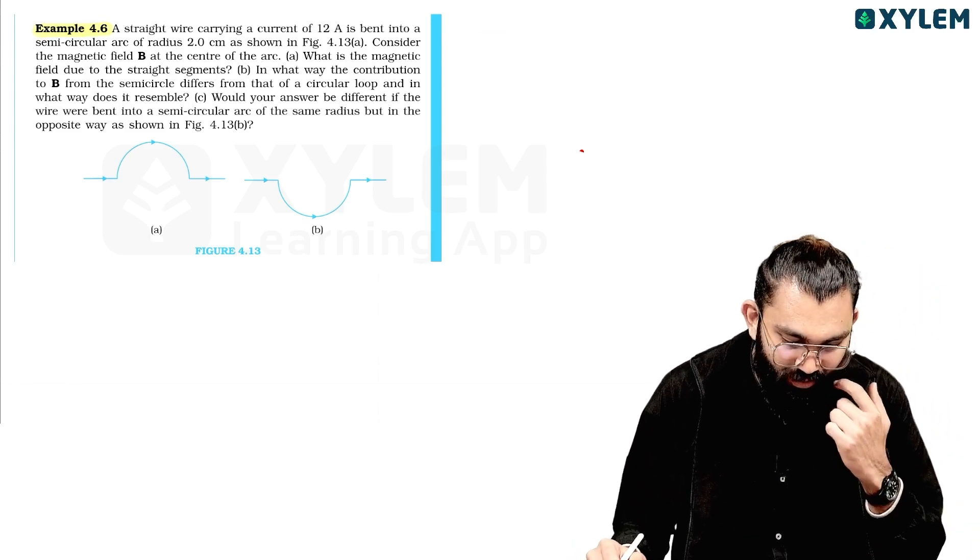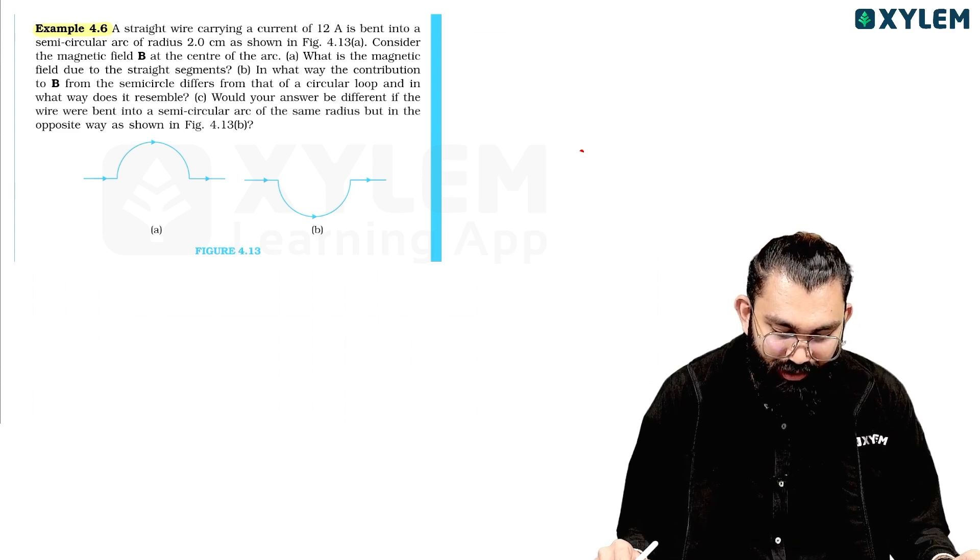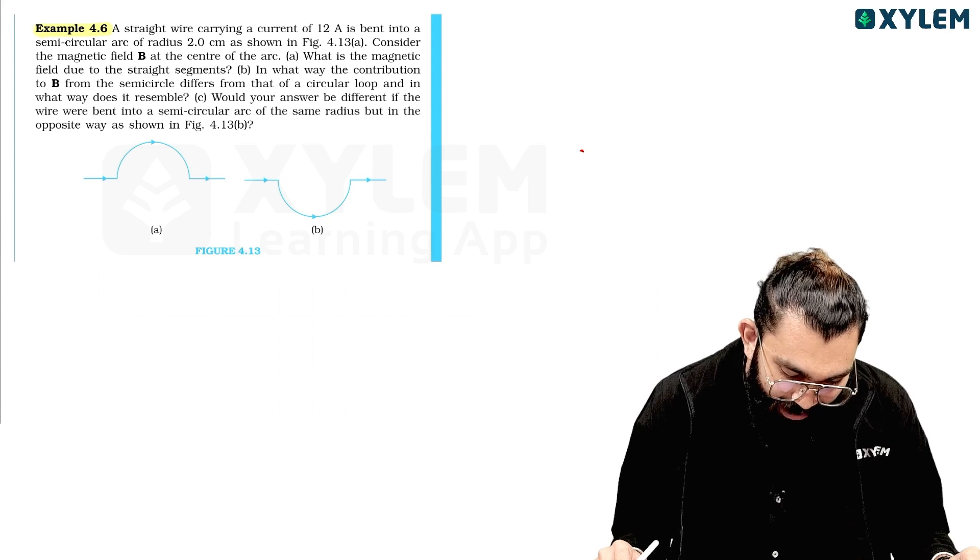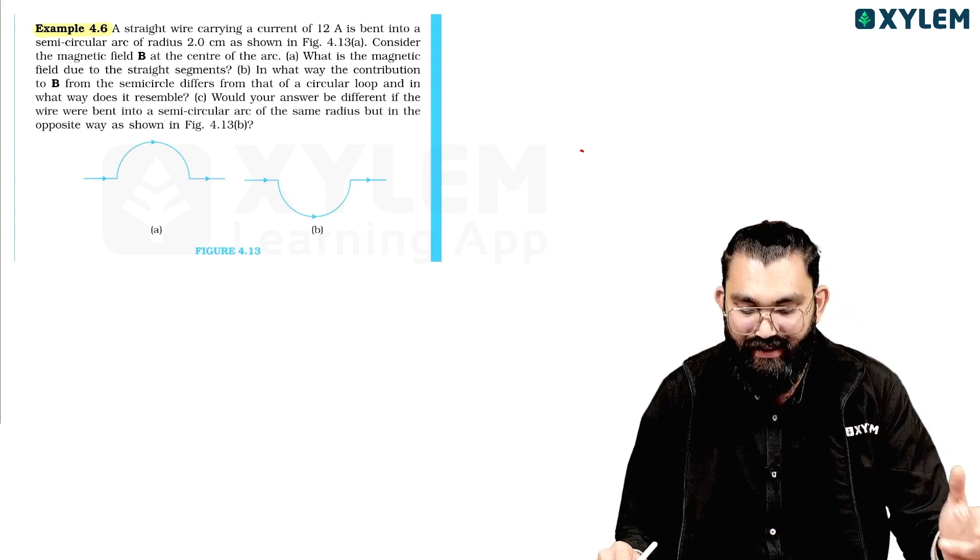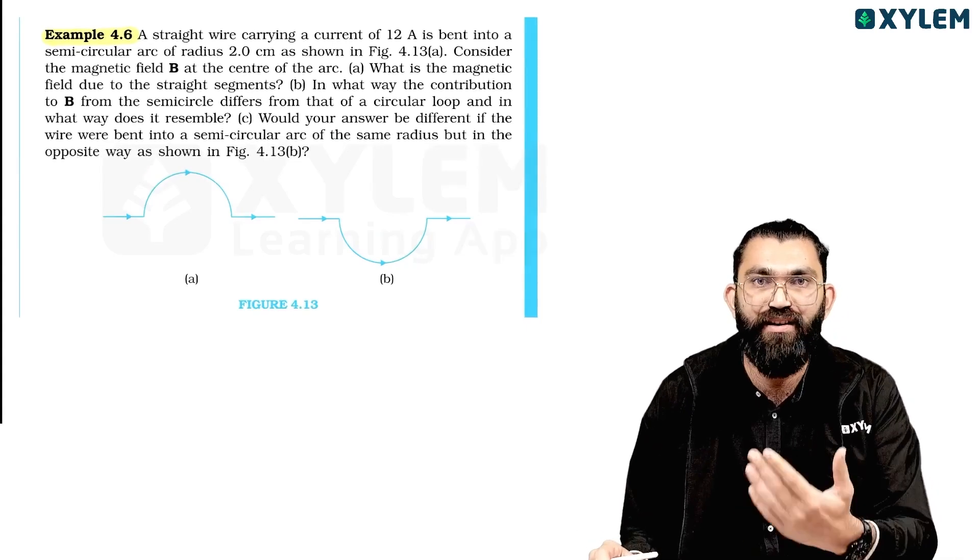Example 4.6: A straight wire carrying a current of 12 amperes is bent into the form of a semi-circle of radius 2 cm. Consider the magnetic field B at the center of the arc. This is a great concept that we will discuss.